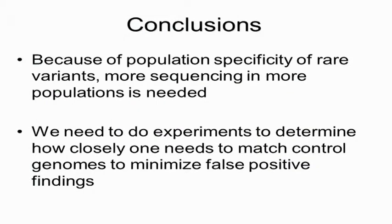To conclude: what we do see from sequence data now is that there are a lot more population-specific rare alleles. That certainly implies that we'll need more sequencing in more populations. But I think one of the things we need to do is conduct experiments to determine how closely we need to match case and control populations to minimize false positives — what FST level would be small enough to minimize false positives without sequencing too many different populations. This is work that needs to be done now that we're getting more and more sequence data from more and more populations.